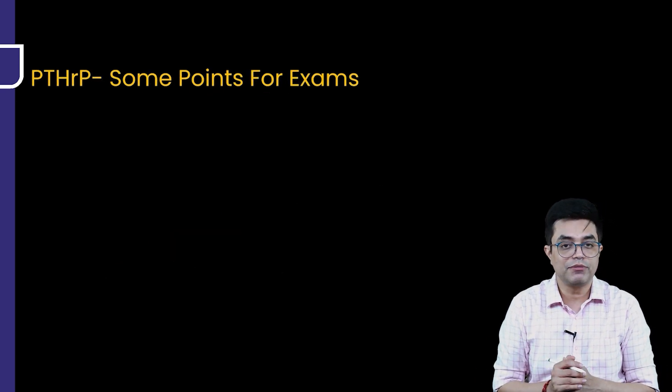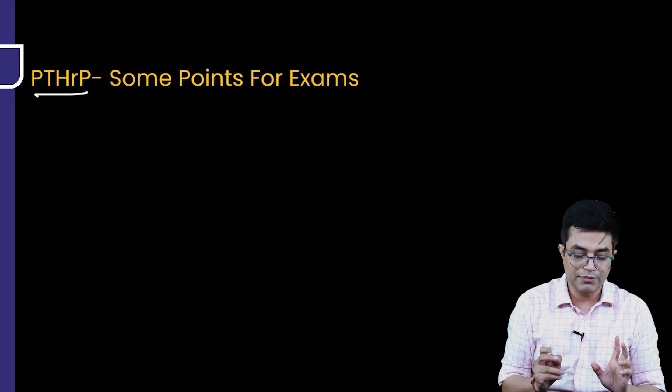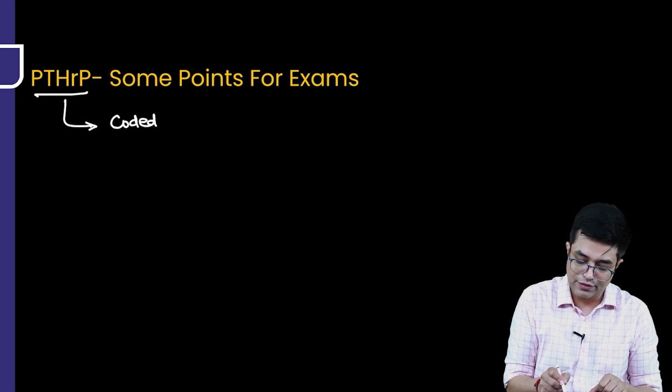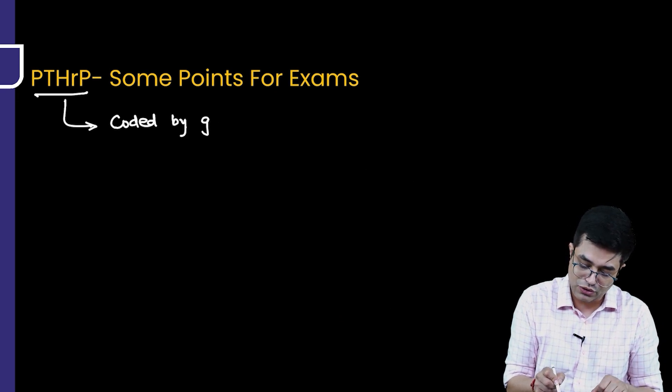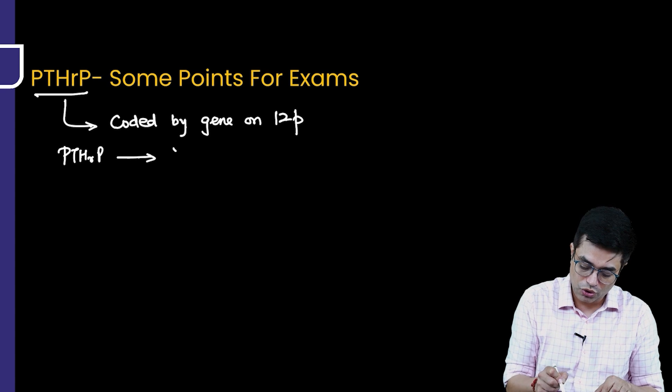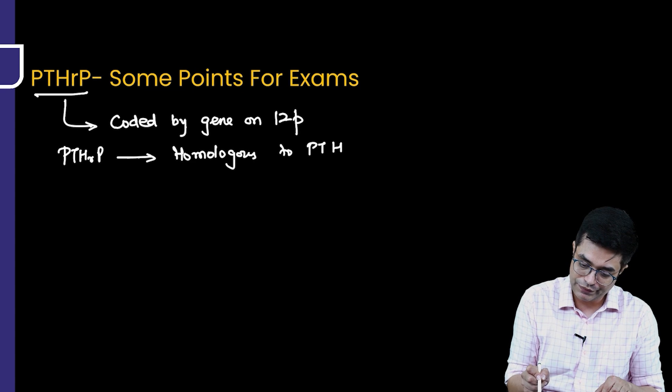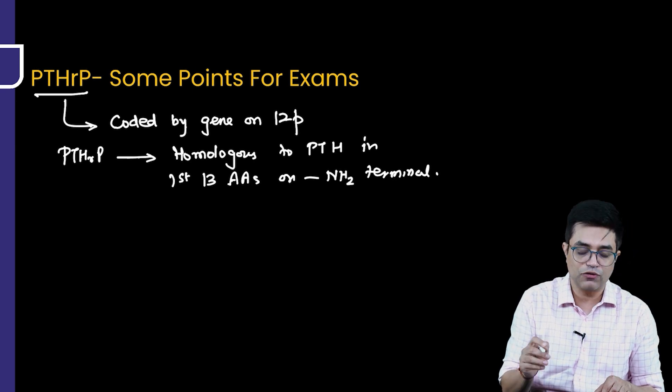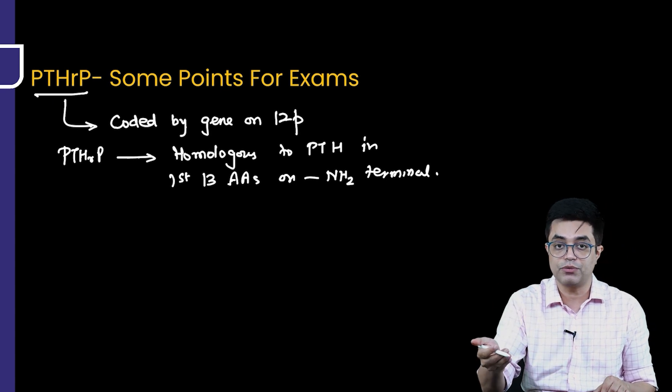PTHRP, some points that you need to remember for the exam. Full form of PTHRP we have already done. PTHRP is coded normally, it is coded in everyone by a gene present on short arm of chromosome 12. So 12P. PTHRP shows homology, it is homologous to the parathyroid hormone in the first 13 amino acids present on the amino terminal. So it is homologous, but it does not perform the same function, it has its own receptors where it acts.